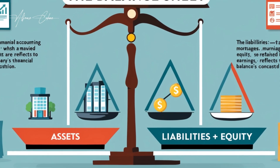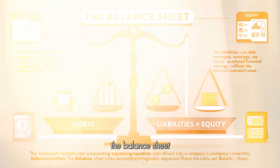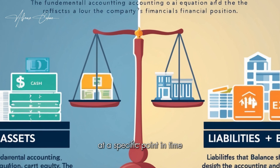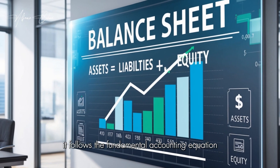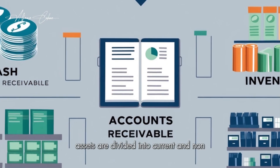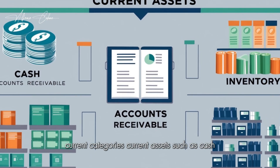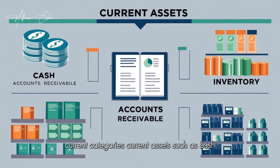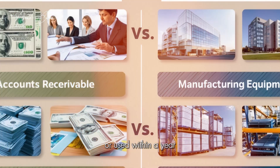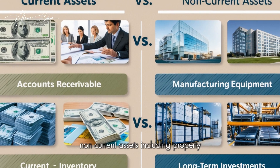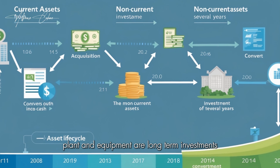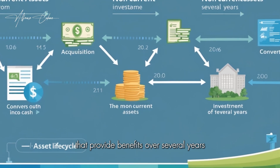The balance sheet provides a snapshot of a company's financial position at a specific point in time. It follows the fundamental accounting equation: Assets = Liabilities + Equity. Assets are divided into current and non-current categories. Current assets such as cash, accounts receivable, and inventory are expected to be converted into cash or used within a year. Non-current assets, including property, plant, and equipment, are long-term investments that provide benefits over several years.